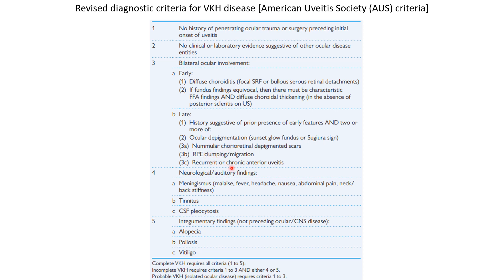The fourth criteria is neurological or auditory findings, including meningismus-like malaise, fever, headache, nausea, abdominal pain, neck or back stiffness, tinnitus, and CSF pleocytosis. The fifth criteria is integumentary findings not preceding ocular or CNS disease, like alopecia, poliosis, and vitiligo. Complete VKH requires all criteria to be fulfilled.